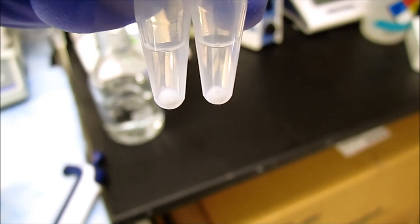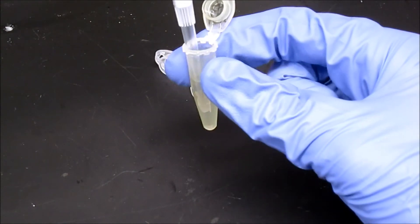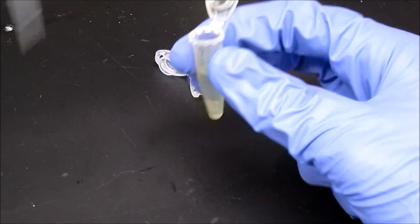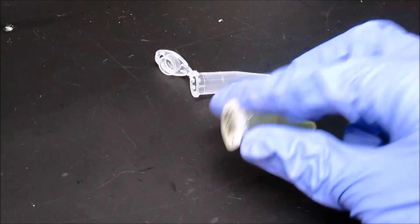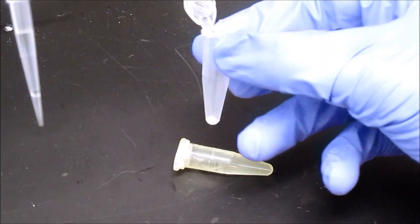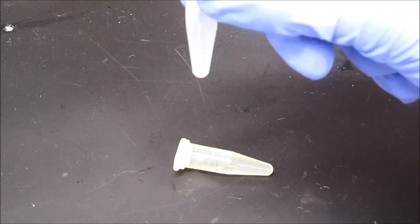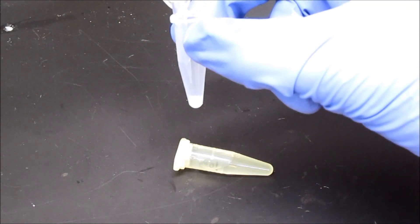Once this final pellet is obtained, 100 microliters of 10 mg per milliliter PEG-thiol is added to each sample. PEG, or polyethylene glycol, increases the stability of liposomes and helps protect them from being cleared out of the bloodstream.